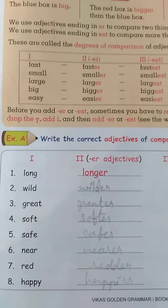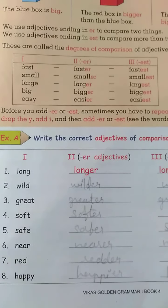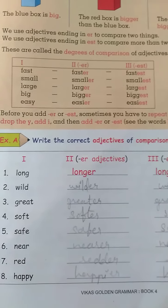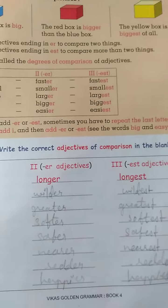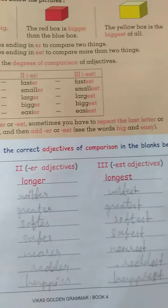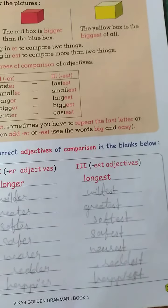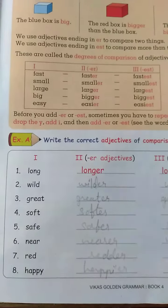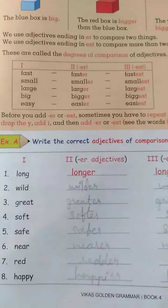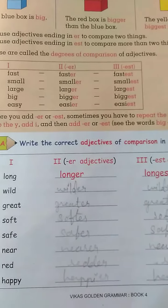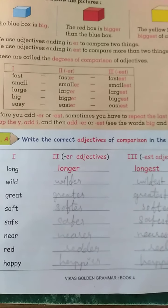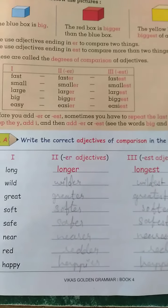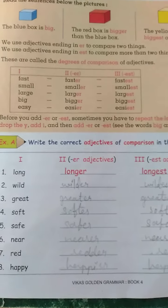Here one exercise is there. Exercise A. Write the correct adjectives of comparison in the blanks below. Long, longer, longest. Wild, wilder, wildest.